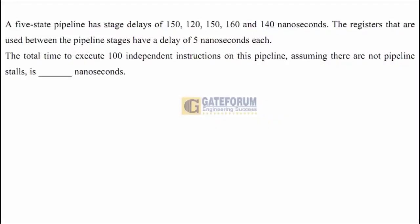Now let us solve a question from GATE 2021 on the topic of pipelining. This is a one-mark question solvable by a simple formula. A five-stage pipeline has stage delays of 150, 120, 150, 160, and 140 nanoseconds. The registers used between the pipeline stages have a delay of 5 nanoseconds each.